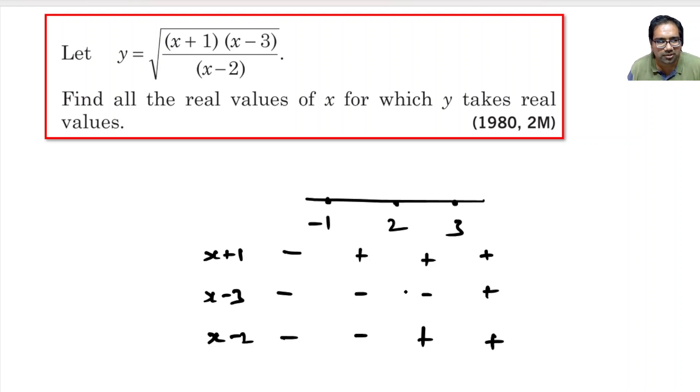So, overall what is it? Here it is 3 negatives, it is negative overall. And here 2 negatives and one positive which is positive, it is negative and it is positive. So, between minus 1 and 2, it is positive and greater than 3 to infinity, it is positive.